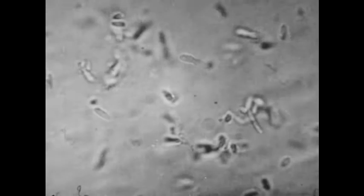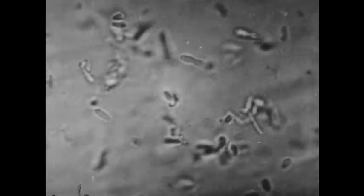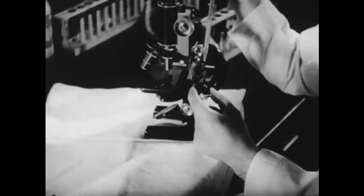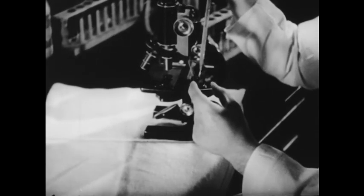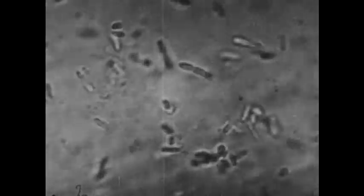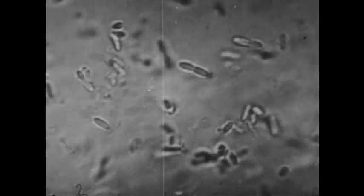Another type of antibody action, such as with these cholera germs, is shown here. Serum containing these antibodies starts a dissolving process on the germs so that they begin to disintegrate and disappear within a short time.